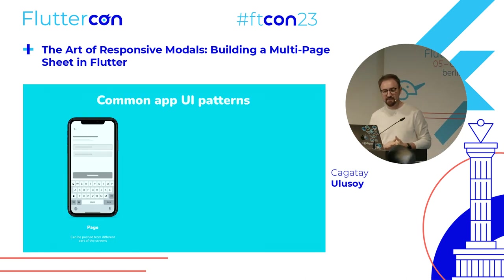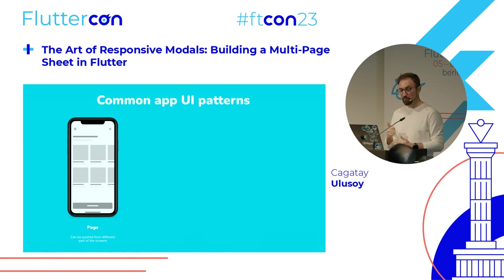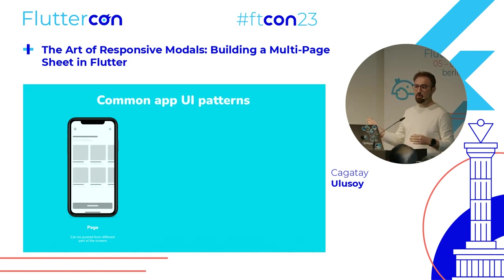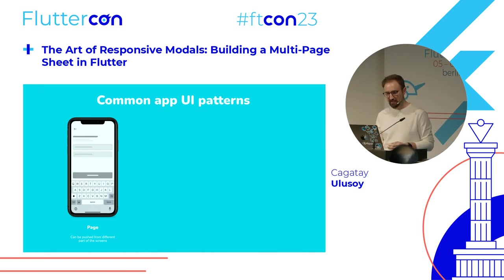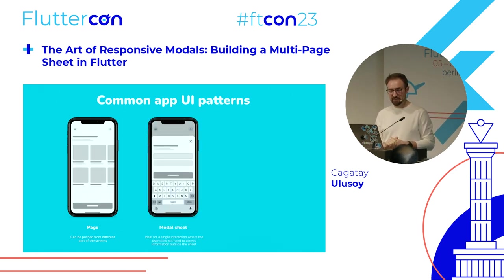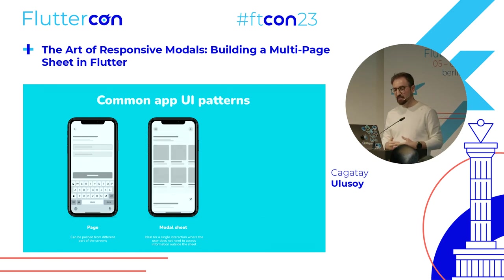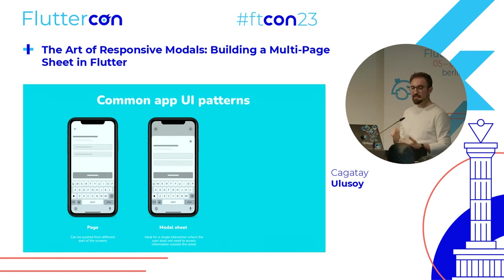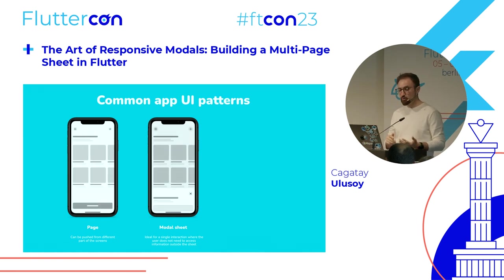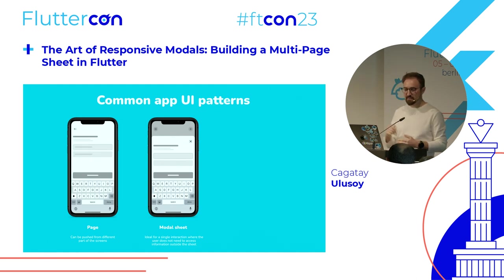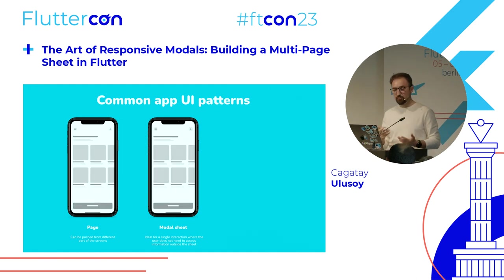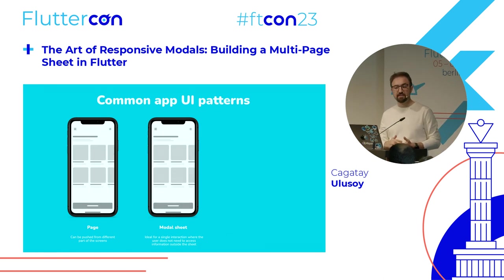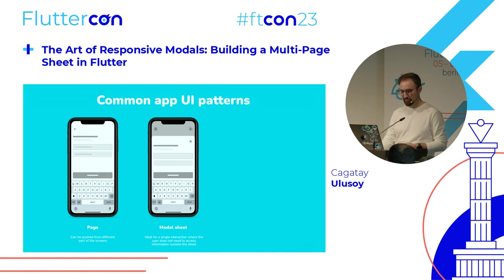Let's talk about the common app patterns that most apps follow. First, a page is a modal that replaces the entire screen — it can be pushed from right, left, or bottom depending on context. Then we have modal sheets, which are used to display extra content or options overlaying over the current screen. They are ideal for a single point of interaction; users can do something with the bottom sheet or dialogue, close it, and they are back in the screen where they were before.